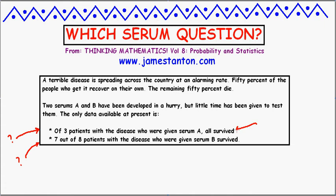So let's ask: if A is having no effect whatsoever, what are the chances of just naturally seeing three out of three people survive? The chance of survival for each individual person is 50%, or one half. So for three people to survive — person one, person two, person three — the chance of seeing that naturally happen is one half times one half times one half, which is one eighth. There's a 12.5% chance of seeing three out of three survive if serum A is doing nothing.